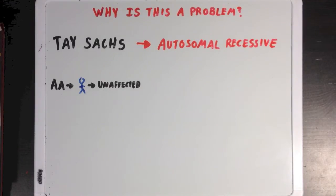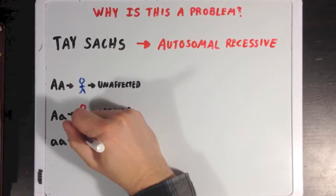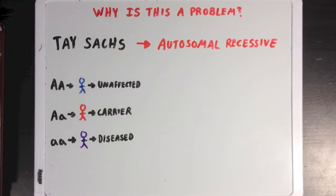People with just one copy of the gene are not affected by the disease, but are carriers for the gene. And I've drawn these people in red. And people with two copies of the gene are affected by the disease. And I've drawn these guys in purple.